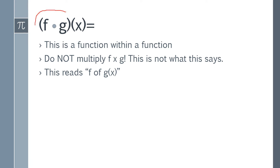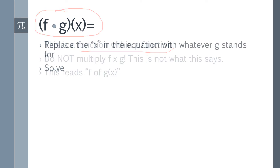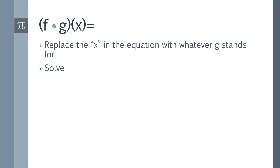Now here's where we start replacing or combining functions. This right here — f with the o, g, and then parentheses x — that looks almost like a function. If it was just f of x, that would be a function, or if it's just g of x, that would be a function. But this says f, o, g with the x in parentheses after it, and what this means is this is a function within a function. Do not multiply f times g — this reads 'f of g of x.' So you're going to replace the x in the equation with whatever g stands for. You're going to take whatever the g equation is and plug that into every single x in the f equation, and then you just solve.